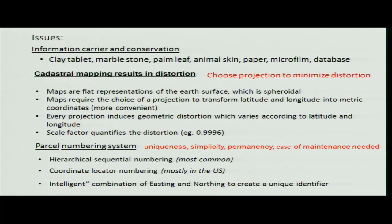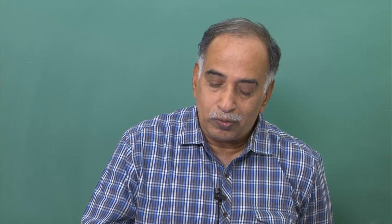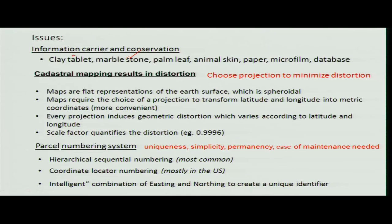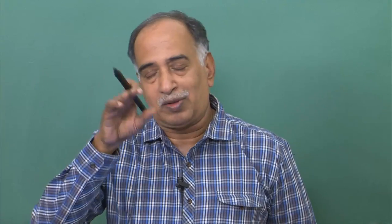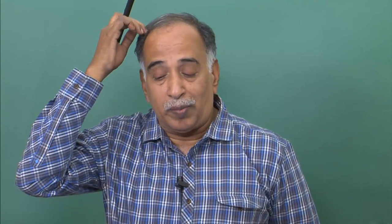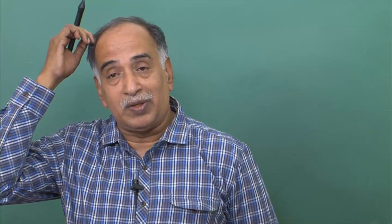The issues in the land information system include physical monuments that identify boundaries on the ground. In earlier days it used to be a clay tablet type of thing fixed on the ground, or a paper record. Now it can be microfilm or databases — these are the places where you have the physical marker as well as the information available on paper, microfilm, or a database.